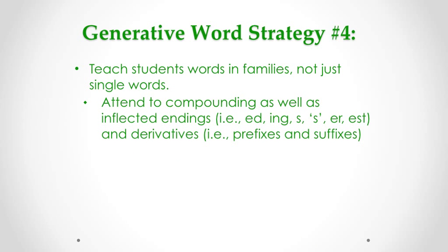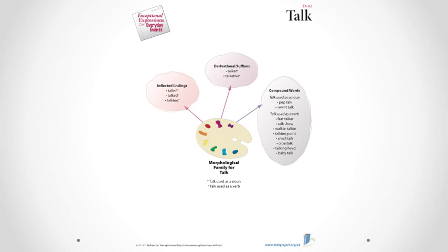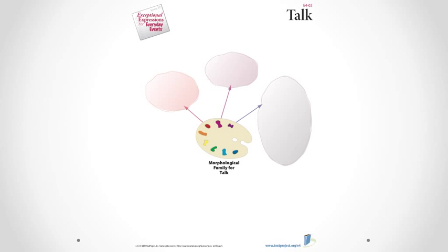The fourth word strategy is that we want to teach students words in families, not just single words. Most words have inflected endings, prefixes, and suffixes, and we can't forget that a prominent way in which new words are formed in English is through compound words. Especially when we invent something new, like the internet, we do a lot of compounding to describe new phenomena — words such as software, hardware, website, and even compounding with abbreviations like email and e-book. In Exceptional Expressions, we give students opportunities to learn about compound words, inflected endings, and derivational words. This is a form where students can apply their knowledge.